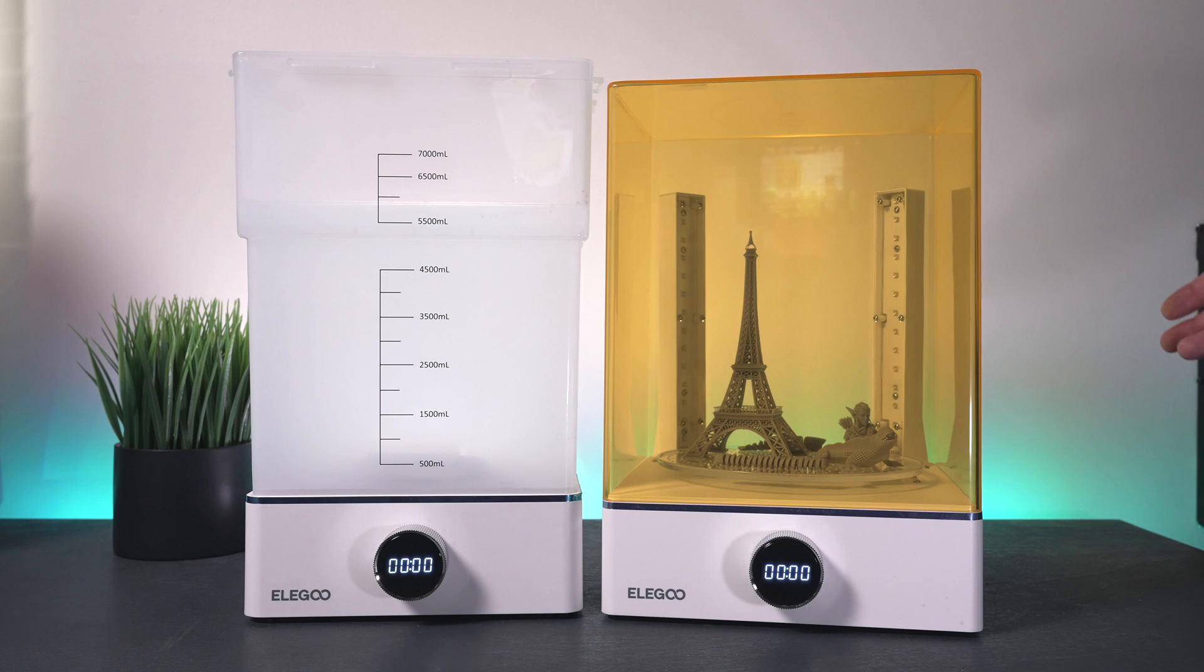So, the Mercury X bundle would work great with any resin printer. But, it does pair very well with the Elegoo Saturn, which is the larger 3D printer. And, maybe the best thing about this whole bundle here is the value that it brings, which is priced very competitively and seems to be a great value. So, yeah, guys, if you are interested in these, I'm going to have some links in the description.